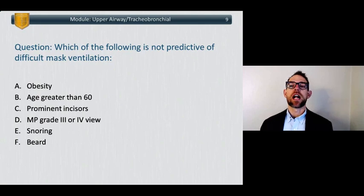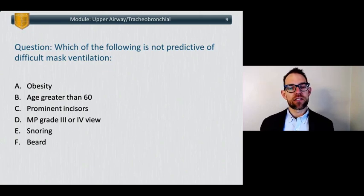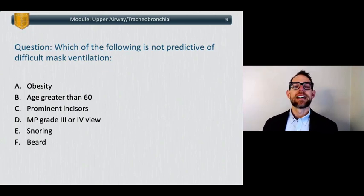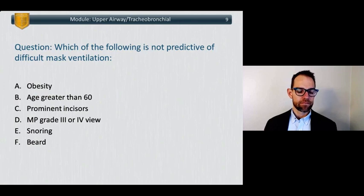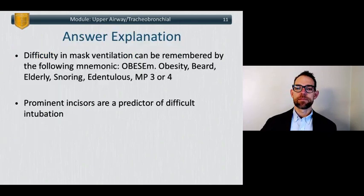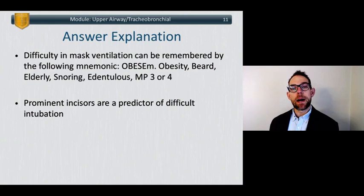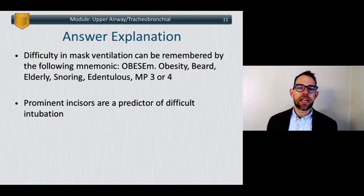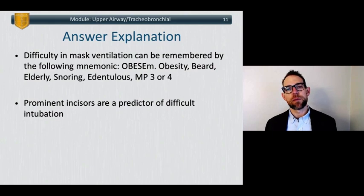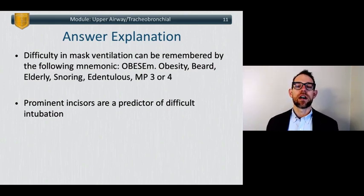Question: which of the following is NOT predictive of difficult mask ventilation? A. Obesity. B. Age greater than 60. C. Prominent incisors. D. Mallampati 3 or 4 view. E. Snoring. F. A beard. The answer is C, prominent incisors. Difficulty in mask ventilation can be remembered by the mnemonic OBESUM: Obesity, Beard, Elderly, Snoring, absence of teeth, and Mallampati 3 or 4. Prominent incisors, while predictive of a difficult intubation, are NOT predictive of difficult mask ventilation.